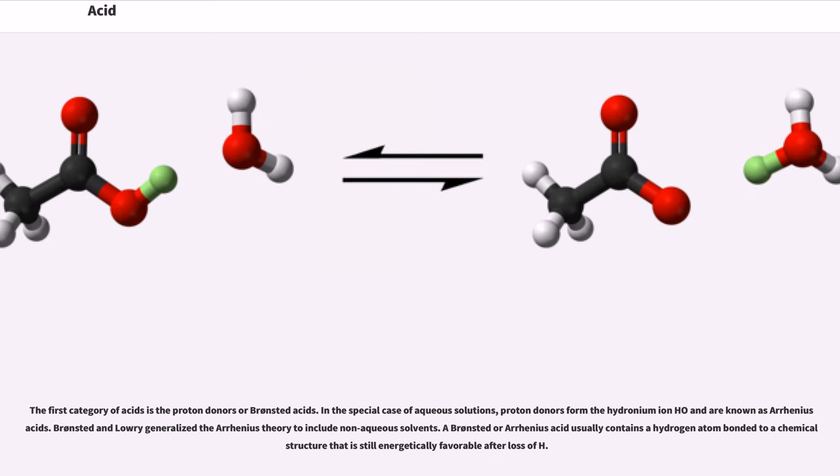The first category of acids is the proton donors or Brønsted acids. In the special case of aqueous solutions, proton donors form the hydronium ion (H3O+) and are known as Arrhenius acids. Brønsted and Lowry generalized the Arrhenius theory to include non-aqueous solvents. A Brønsted or Arrhenius acid usually contains a hydrogen atom bonded to a chemical structure that is still energetically favorable after loss of H+.